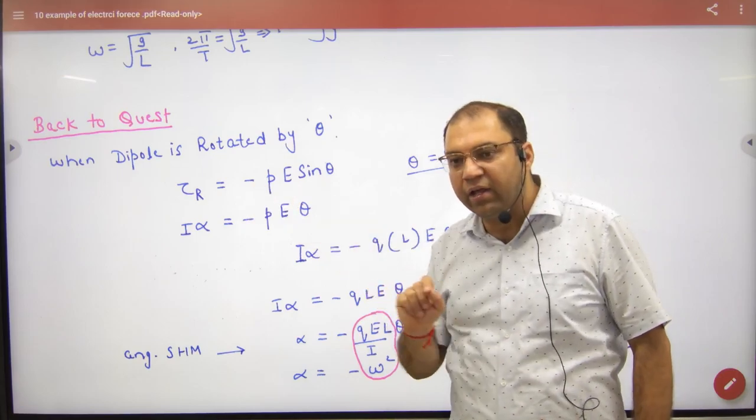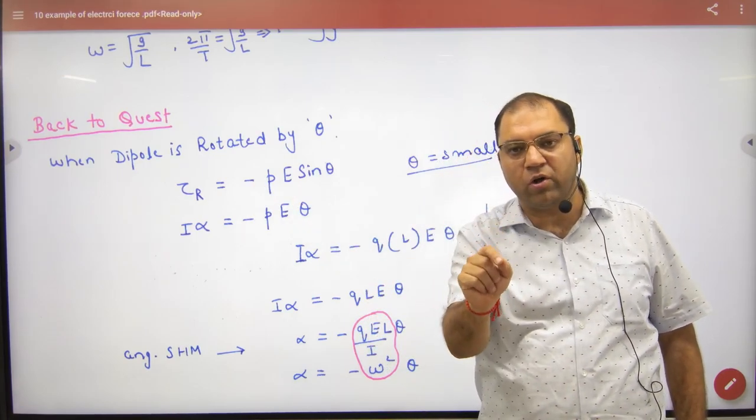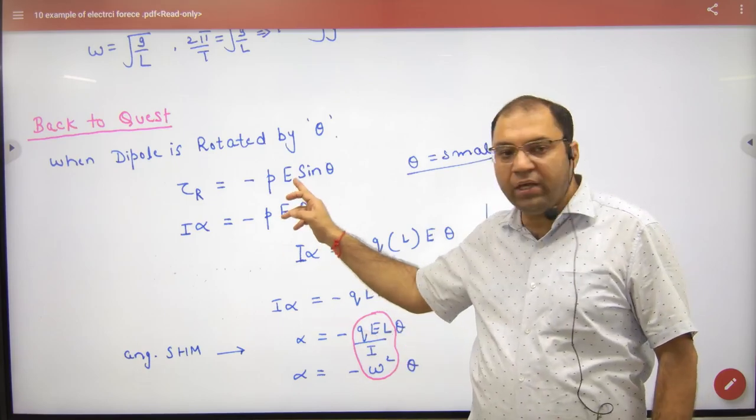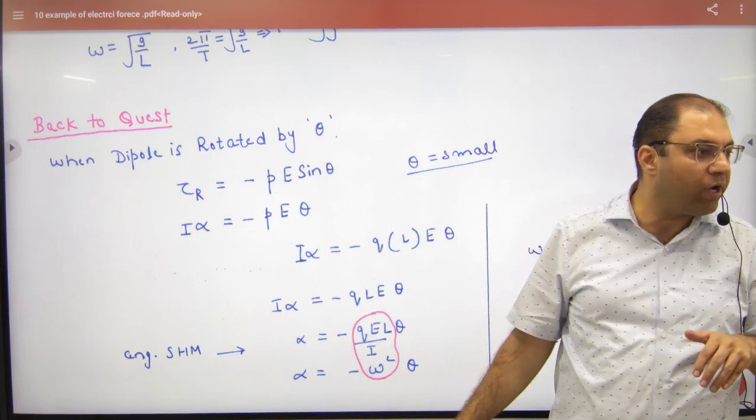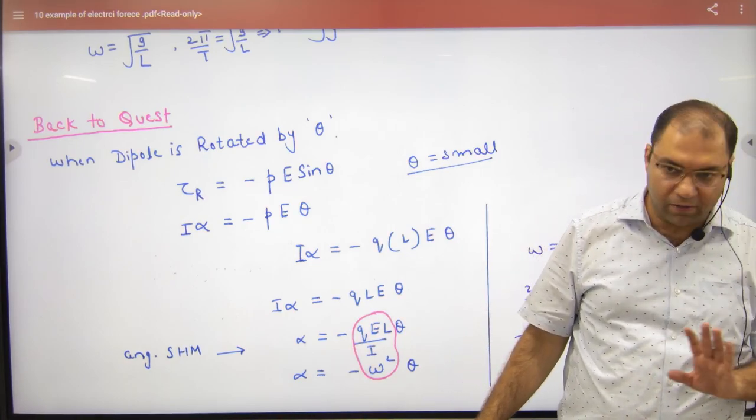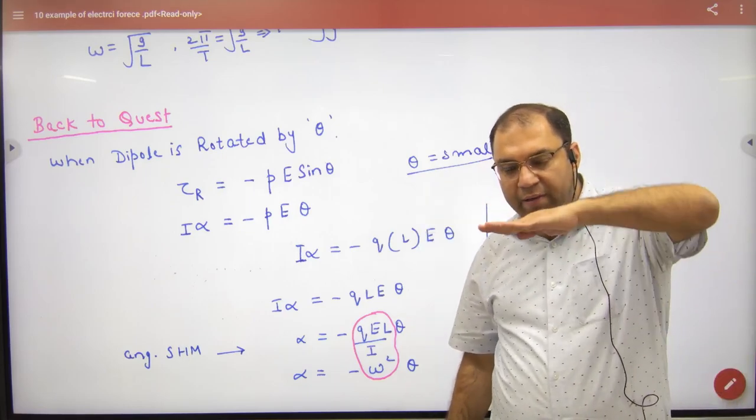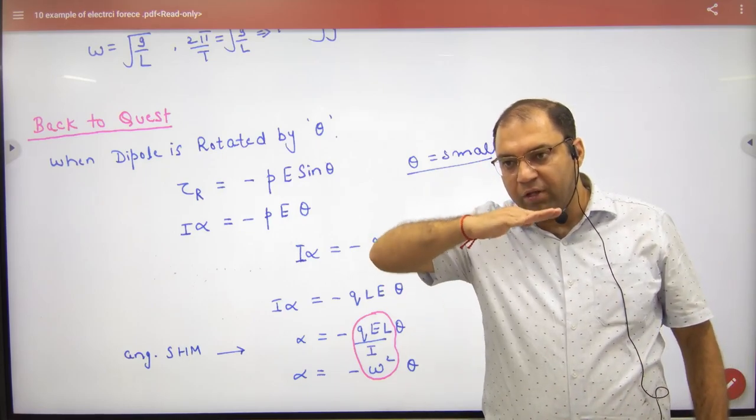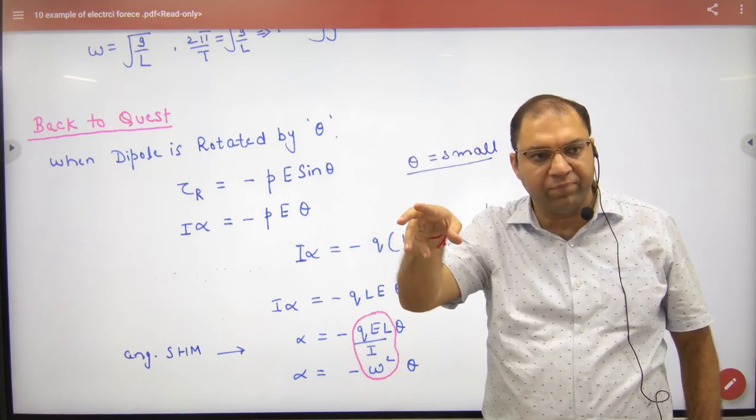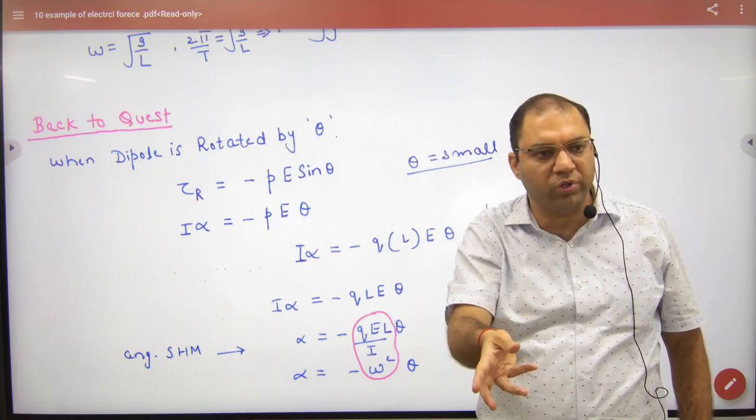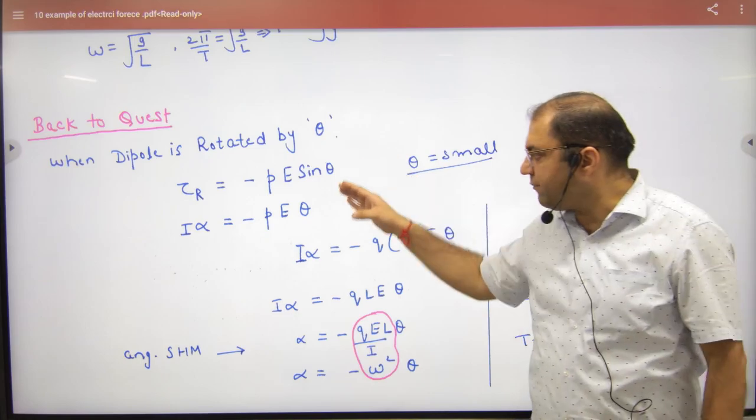It will be minus P E sin theta. That's the torque formula, P sin theta. This is restoring torque. The angles are very small because these vibrations are very small. So where sin theta is, approximately when angle is small, it becomes theta. So sin theta can be written as theta.